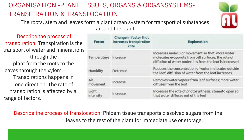Transpiration and translocation. The roots, stem and leaves form a plant organ system for transport of substances around the plant. Transpiration is the transport of water and mineral ions through the plant from the roots to the leaves through the xylem. The xylem is a tissue. Transpiration happens in one direction — from the roots to the leaves — and the water then evaporates through the stomata.